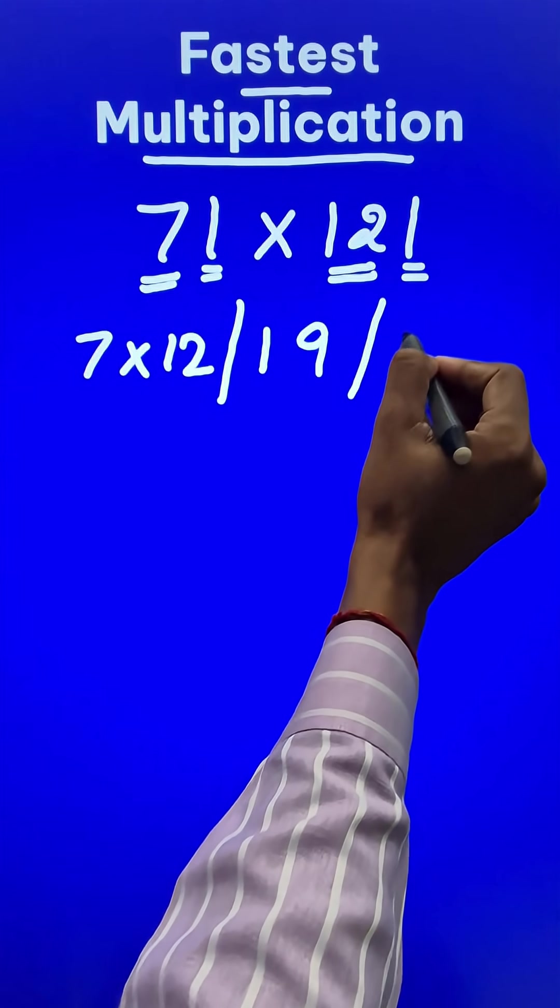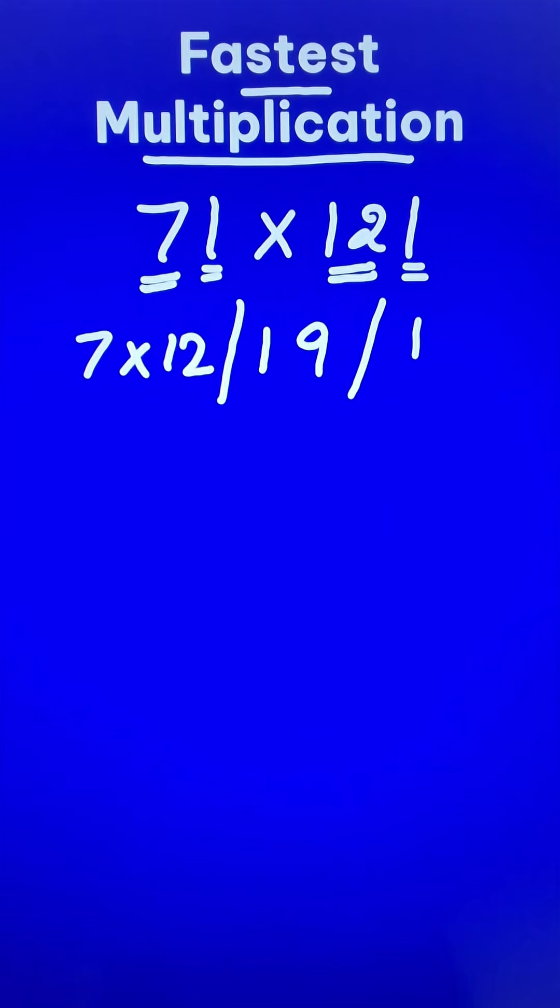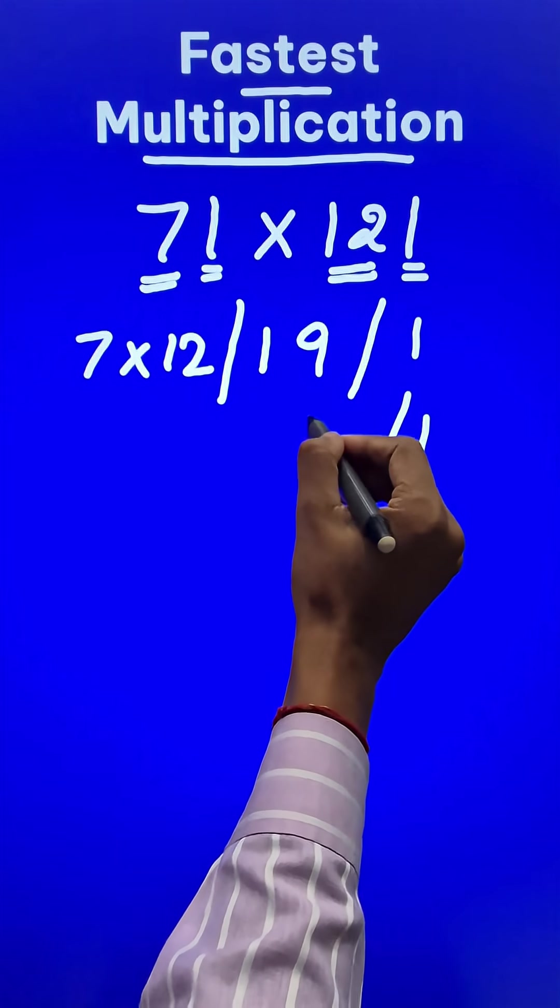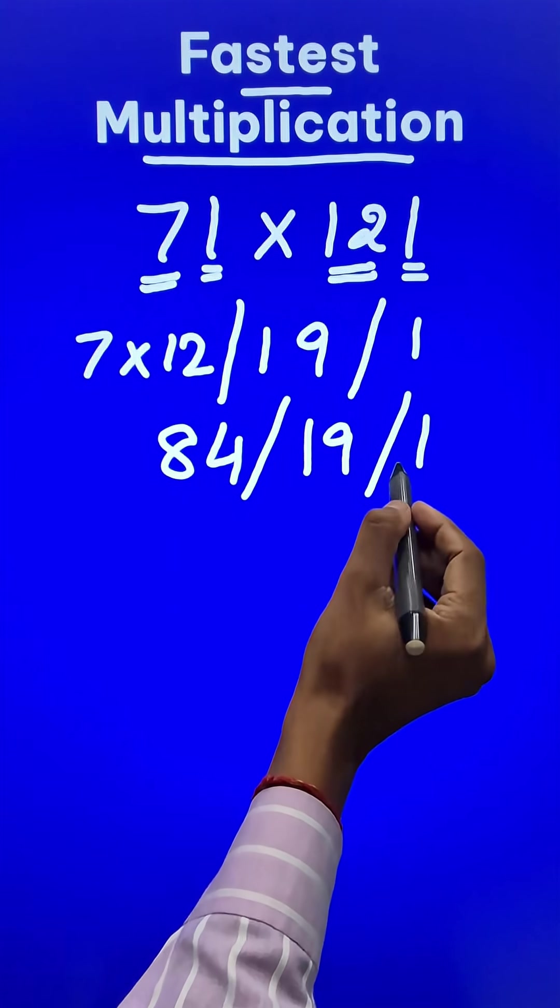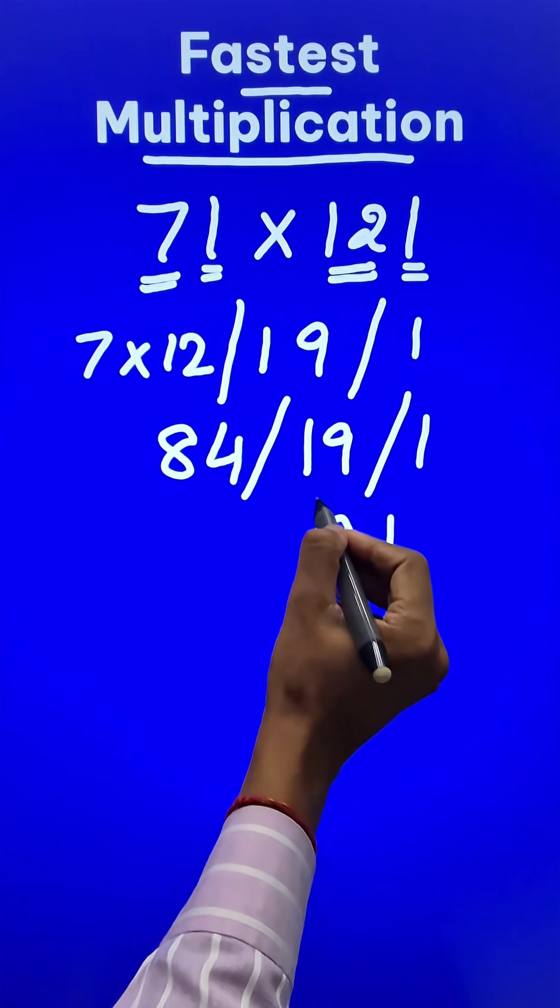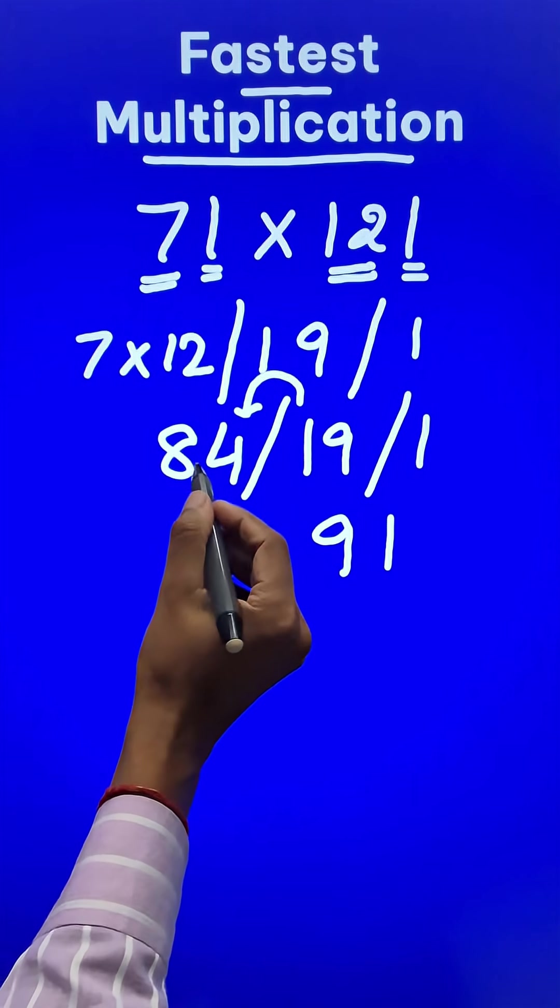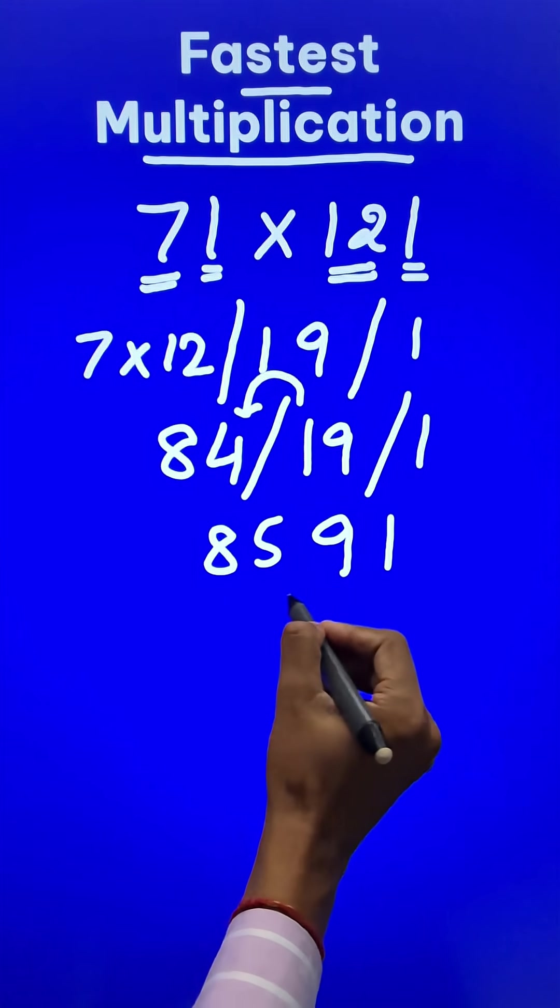7 plus 12 is 19, and then write a 1 as the default number. Now we have 1, 19, and 7 times 12 is 84. Now start retaining the unit digit 1. From 19, we keep 9 and the 1 gets carried forward. So 84 plus 1 is 85, and you have your answer: 8591.